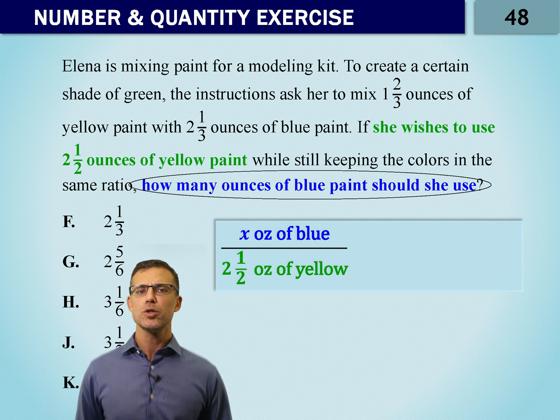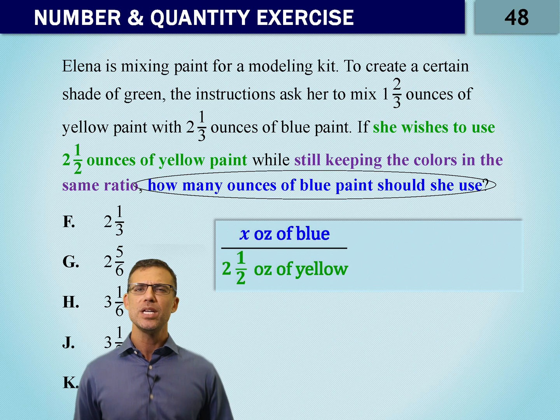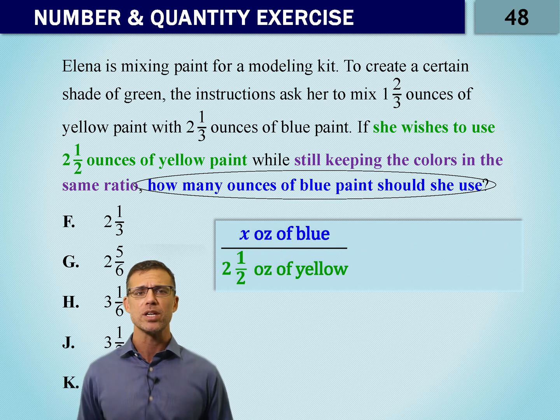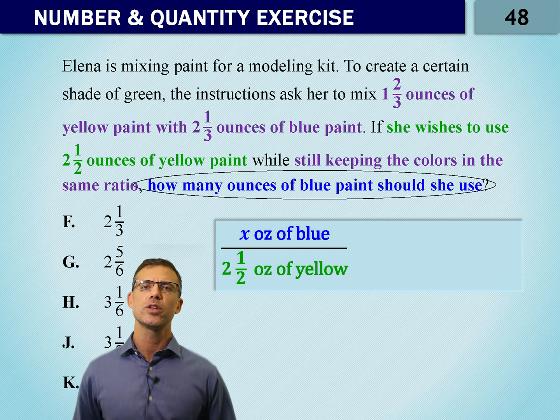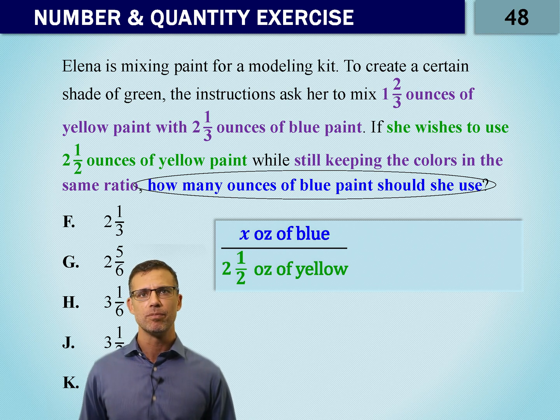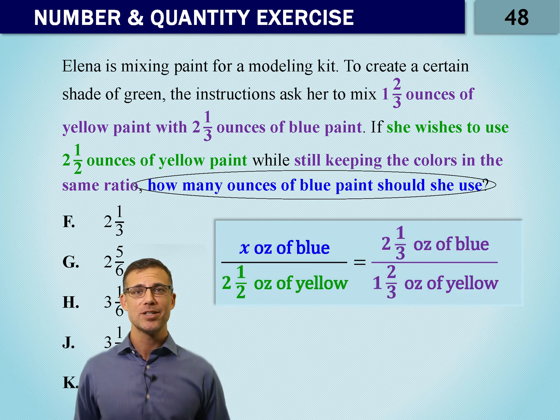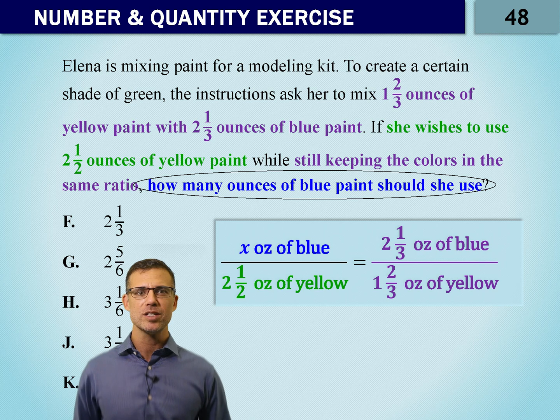But remember that what we're also trying to do is incorporate the other pieces of information that have been presented earlier in the problem. We can't solve for X unless we have some kind of comparison. So what do we find out? Two and a third ounces of blue and one and two-thirds ounces of yellow. So we're going to put blue on the top so it matches and yellow on the bottom so it matches. And we've got two and one-third over one and two-thirds.